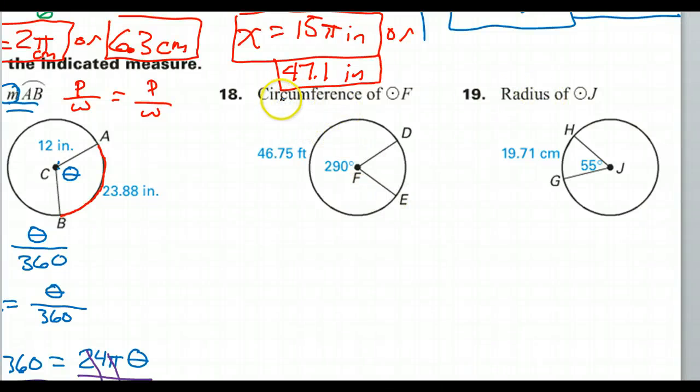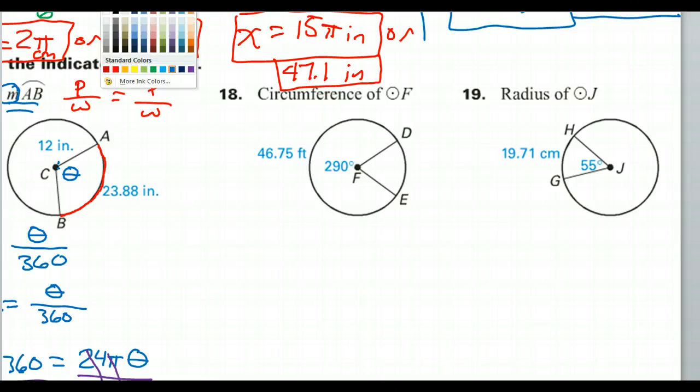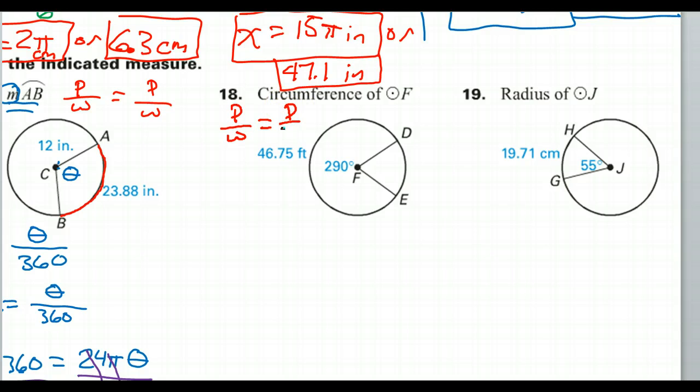So each of these we really have to look at what we are being asked to find. We see we have arc length and all this good stuff, so once again we are going to be looking at part over whole equals part over whole. Let's look at what we have and what we don't have.